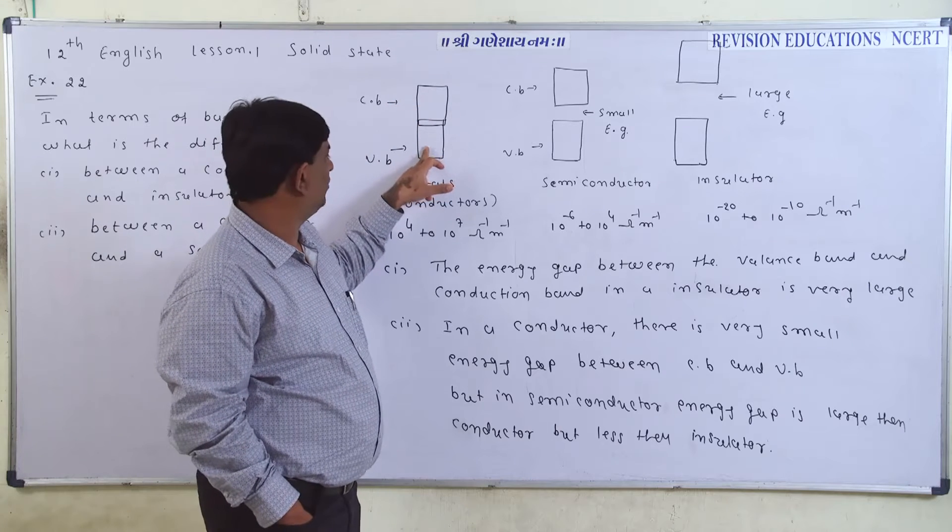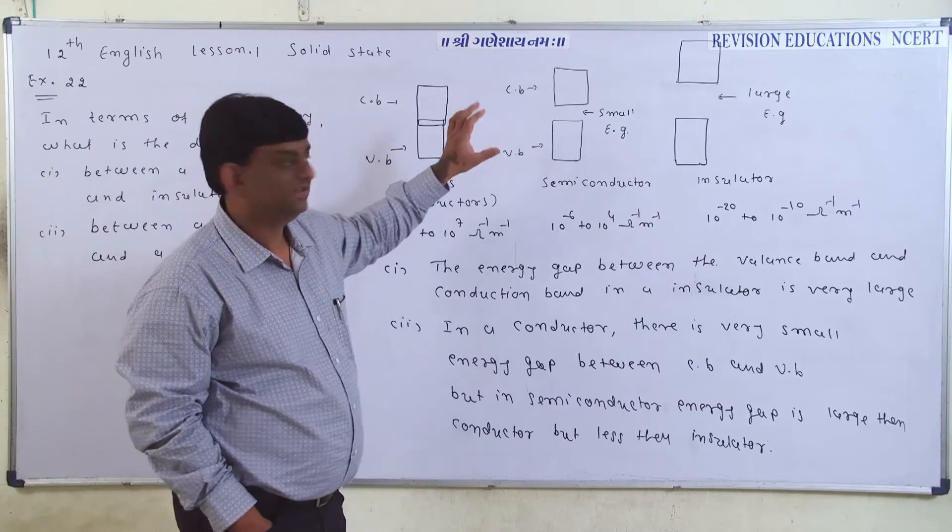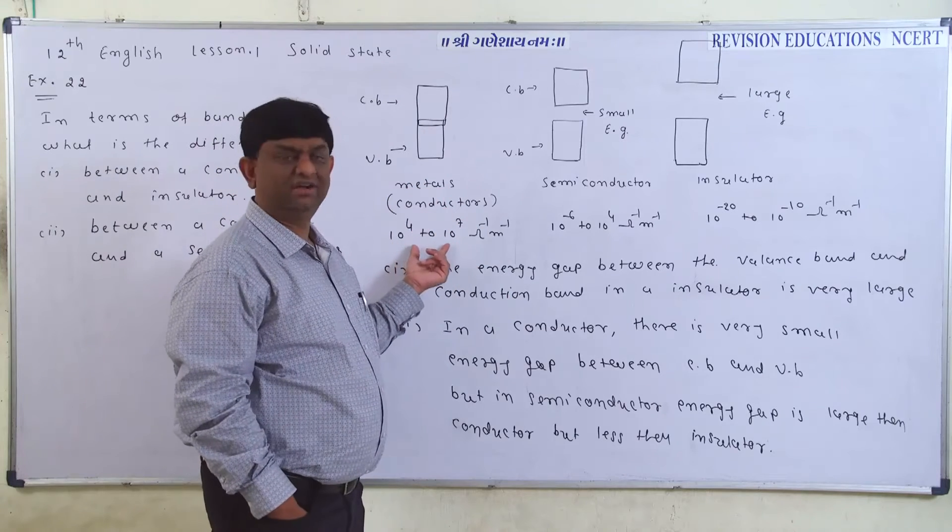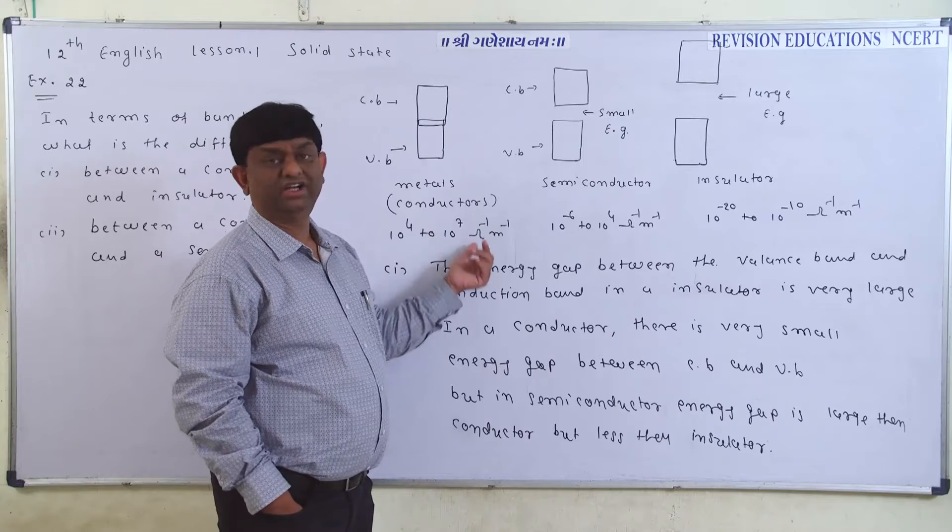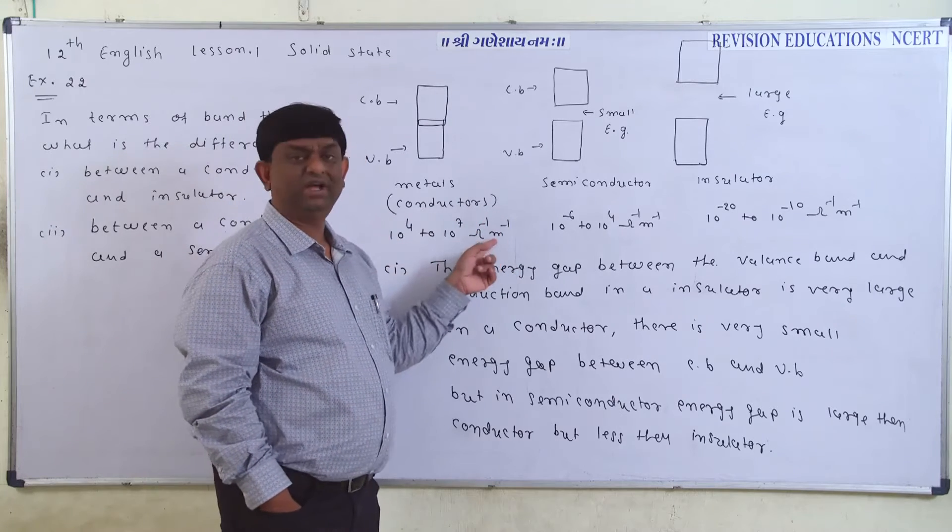So, electron easily, any temperature of the valence band to the conduction band. So, metals are always good conductor. This value is 10 to the 4 to 10 to the 7, ohm-inverse, meter-inverse. This value is up to MCQ.